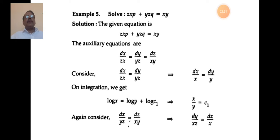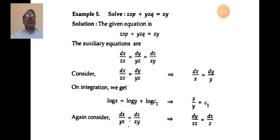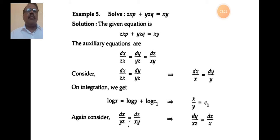The auxiliary equation is dx/zx = dy/yz = dz/xy. To solve, take dx/zx and dy/yz — you can cancel z on both sides, giving dx/x = dy/y. This is a variable separable differential equation.